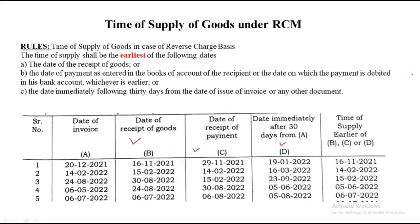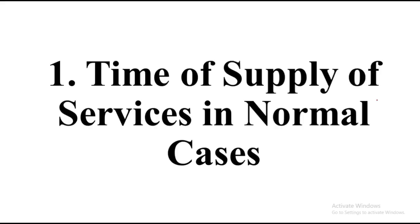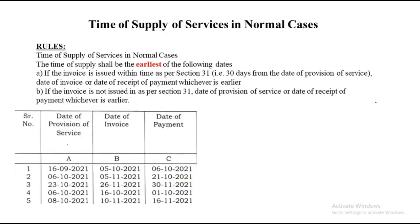Now we move to time of supply of services. There are only two types. First type: time of supply of service in normal cases. The rule is: if the invoice is issued within the time limit as per Section 31 — that is within 30 days from the date of provision of service — then the time of supply is the earlier of date of invoice or date of payment. If the invoice is not issued within the 30-day time limit, then the time of supply is the earlier of date of provision of service or date of payment.